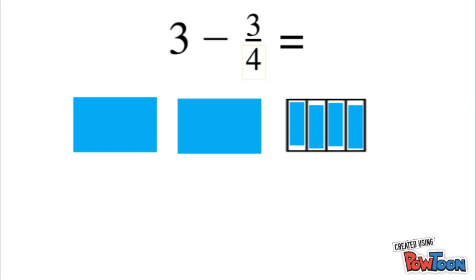So now we can rewrite this as two wholes and 4/4. And remember, 4/4 is equivalent to a whole, so this is still equal to 3. We're just rewriting it to show the 4/4. Now we can take away 3/4.